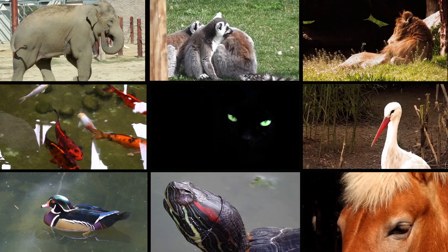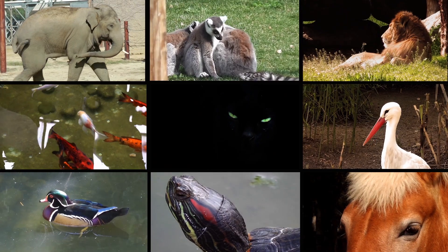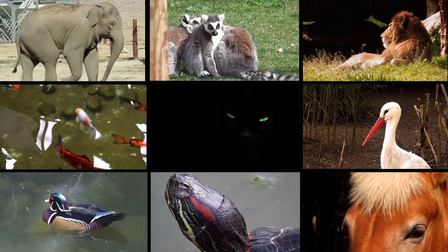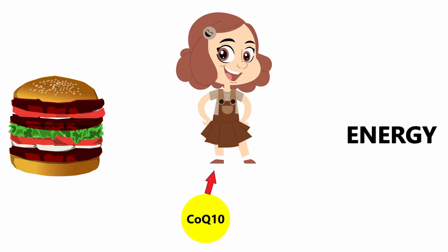CoQ10 is a fat-soluble antioxidant produced by all living organisms, including animals, bacteria, and humans. It can be obtained from the diet but is also produced by the human body. It is needed to convert food into energy, and as we age our ability to produce CoQ10 decreases, particularly with certain conditions such as heart disease.